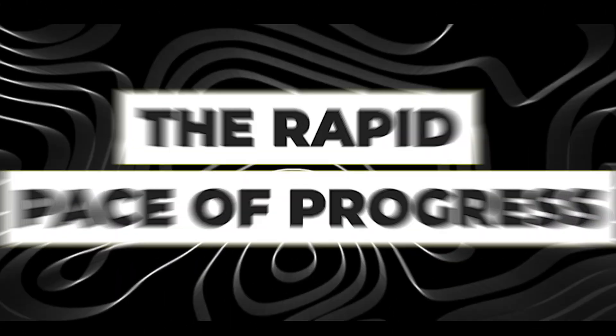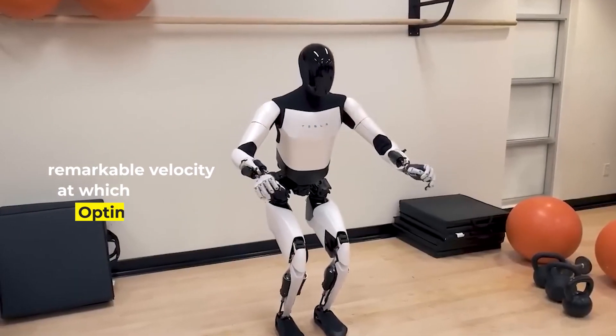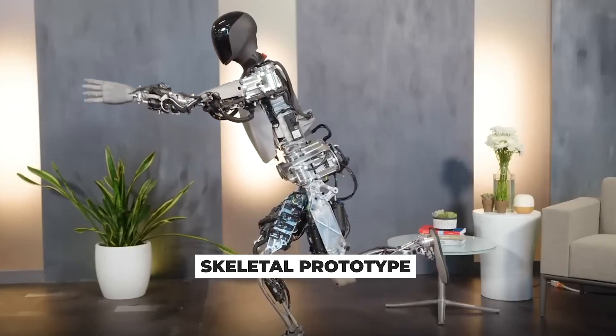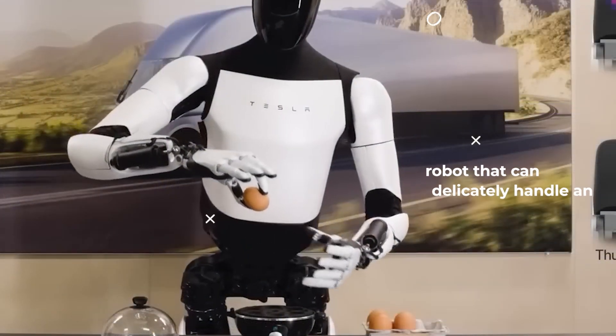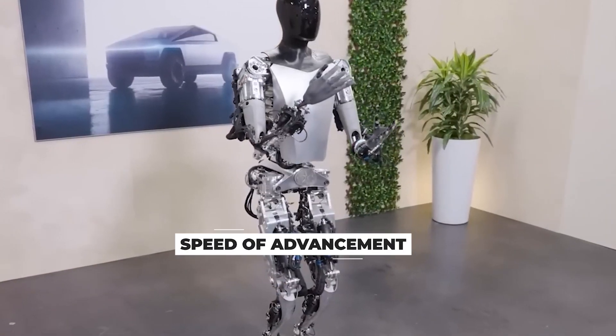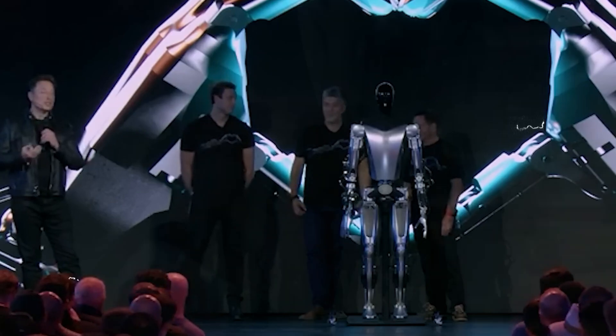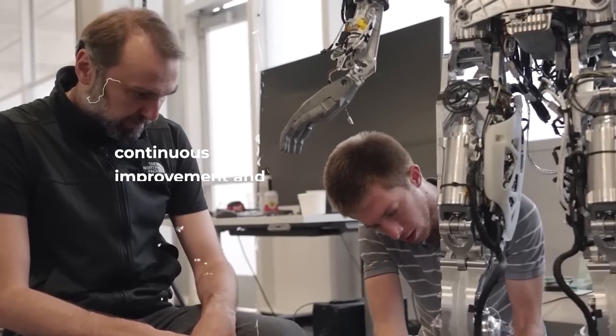What sets Tesla's progress apart is the remarkable velocity at which Optimus Robot has evolved. From a skeletal prototype devoid of meaningful functionalities just two years ago, to a robot that can delicately handle an egg today, the speed of advancement is unparalleled. This swift progress underscores Tesla's dedication to continuous improvement and innovation within the burgeoning field of robotics.